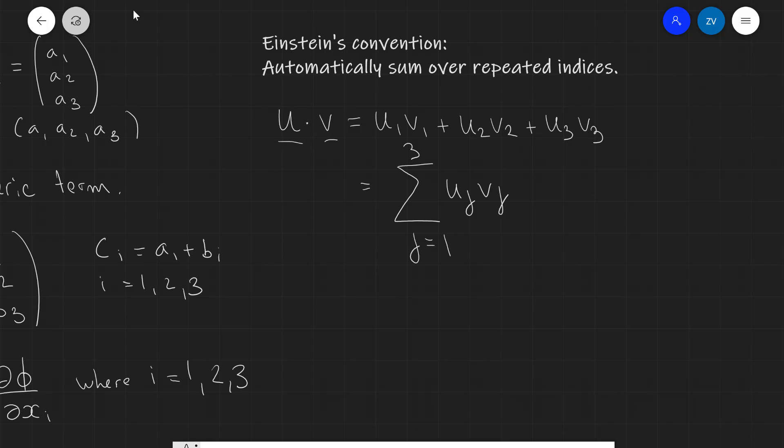So, in this case, we have a repeated index because in the dot product, we are multiplying the x component of u with the x component of v, and the y component of u with the y component of v and the z component of u with the z component of v. So, the way to tackle this is using this summation.